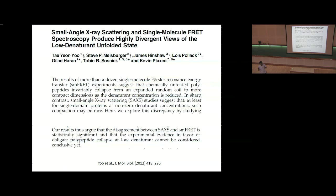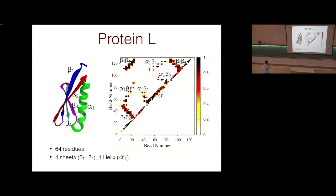The goal is to address the source of this discrepancy between SAXS and FRET. The discrepancy is particularly clear for a protein called Protein L, where there is clean data from both SAXS and FRET. It is a model protein with 64 residues; in its folded form it has four beta strands labeled beta-1, beta-2, beta-3, and beta-4, and one helix.